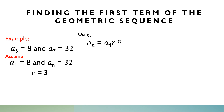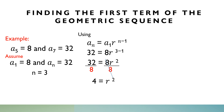Using the geometric sequence formula and solving for r: assuming a sub n is 32, a sub 1 is 8, and n is 3. So we have 32 equals 8 times r to the power of 3 minus 1, which is 2. To cancel out 8, we divide both sides by 8. So 32 divided by 8 is 4, giving us 4 equals r squared. To cancel the squared, we take the square root of both sides. What is the square root of 4? That is 2, so our r is 2.